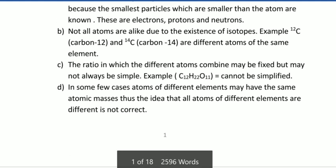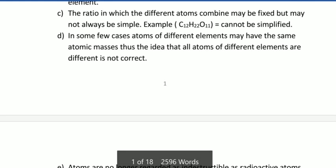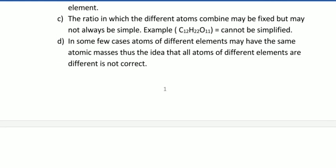Another thing: the ratio in which different atoms combine may be fixed, but may not always be simple. For example, maltose, a combination of two monosaccharides we studied in organic chemistry and biochemistry.